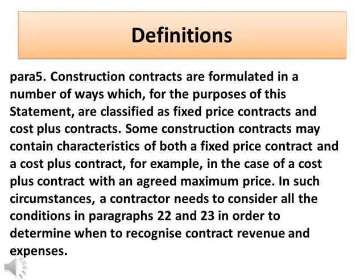Para 5: Construction contracts are formulated in a number of ways which, for the purposes of this statement, are classified as fixed-price contracts and cost-plus contracts. Some construction contracts may contain characteristics of both a fixed-price contract and a cost-plus contract — for example, in the case of a cost-plus contract with an agreed maximum price. In such circumstances, a contractor needs to consider all the conditions in paragraphs 22 and 23 in order to determine when to recognize contract revenue and expenses.